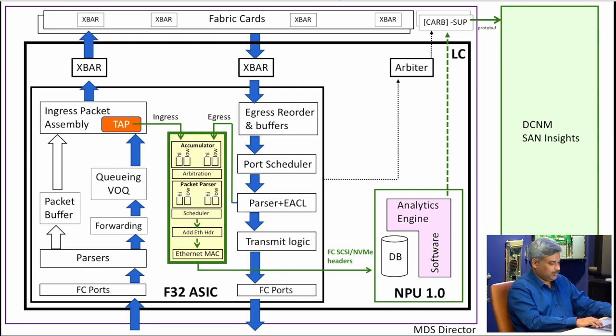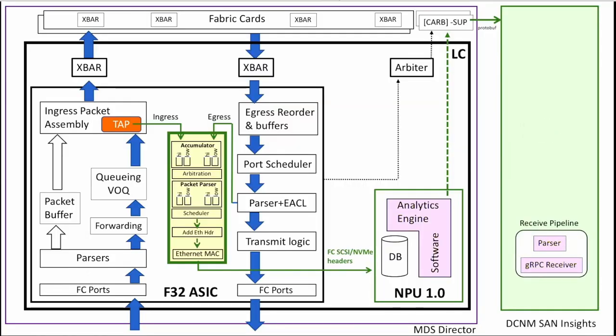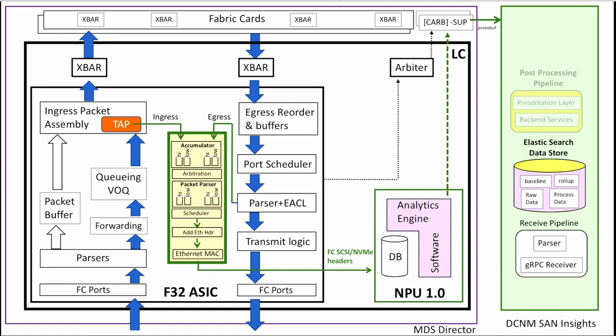The analytics engine and NPU take data from the on-chip collector and send it out to DCNM for visualization via a gRPC call. The data is parsed and forms an elastic data store, which can be used for anomaly detection or baselining metrics. It then goes to the presentation layer and is presented on a GUI in the application.